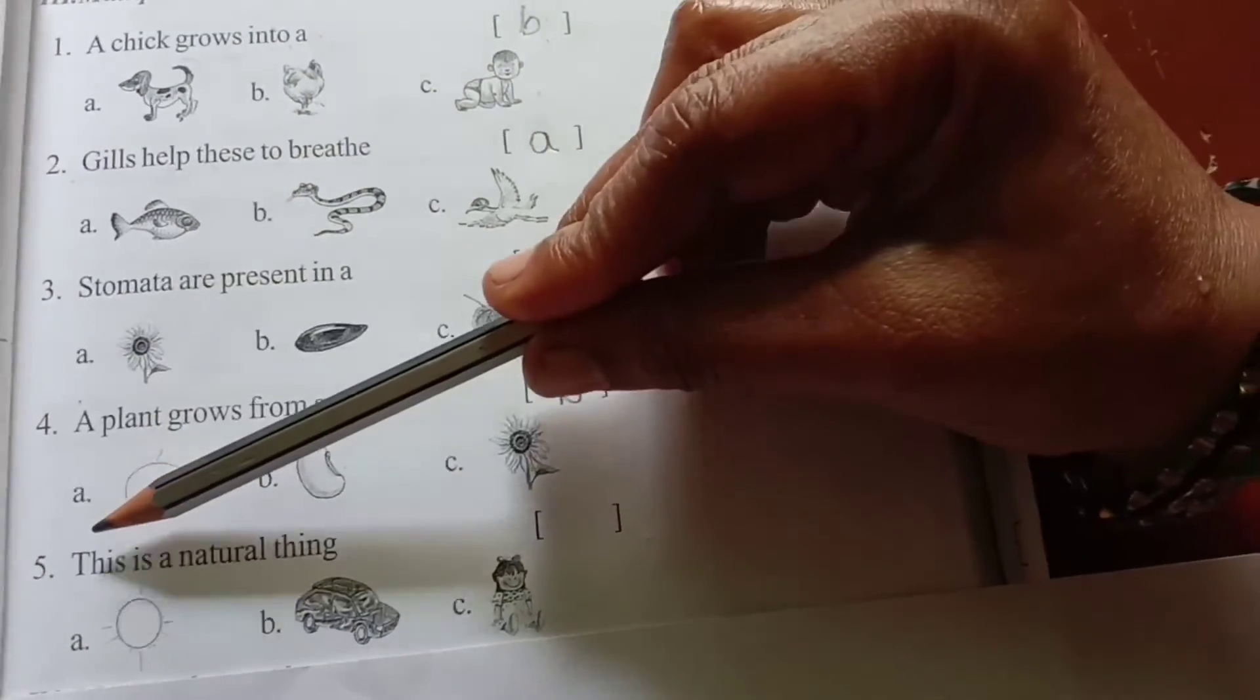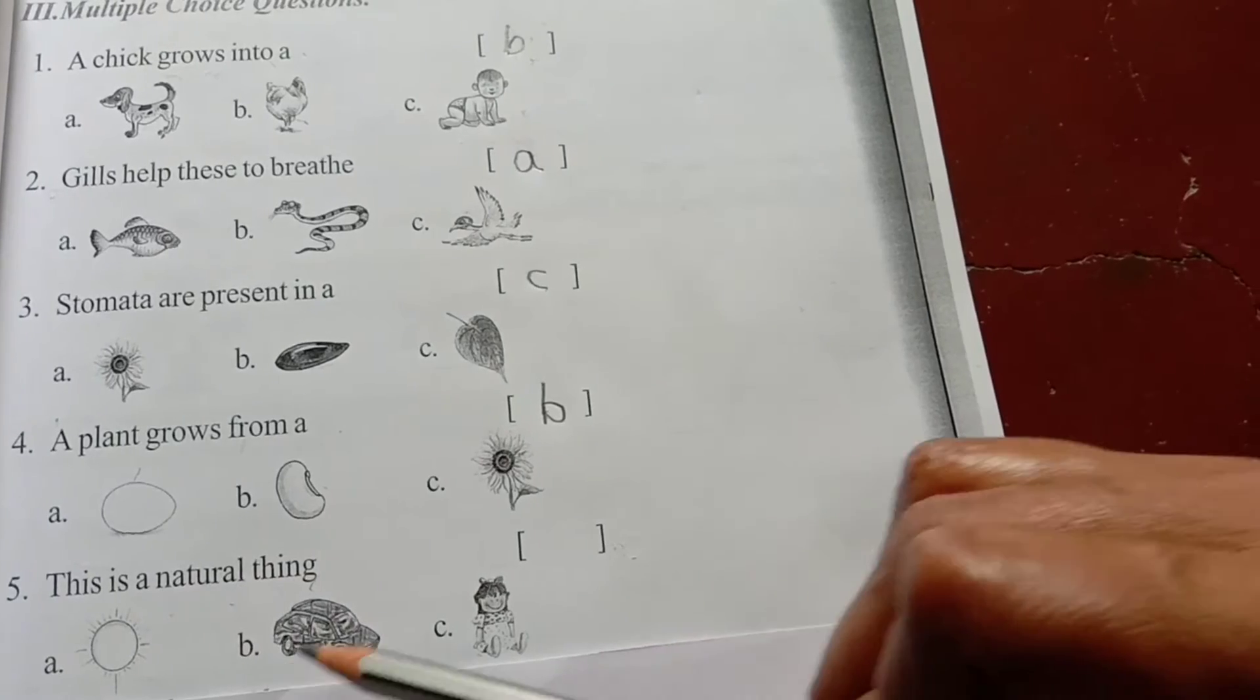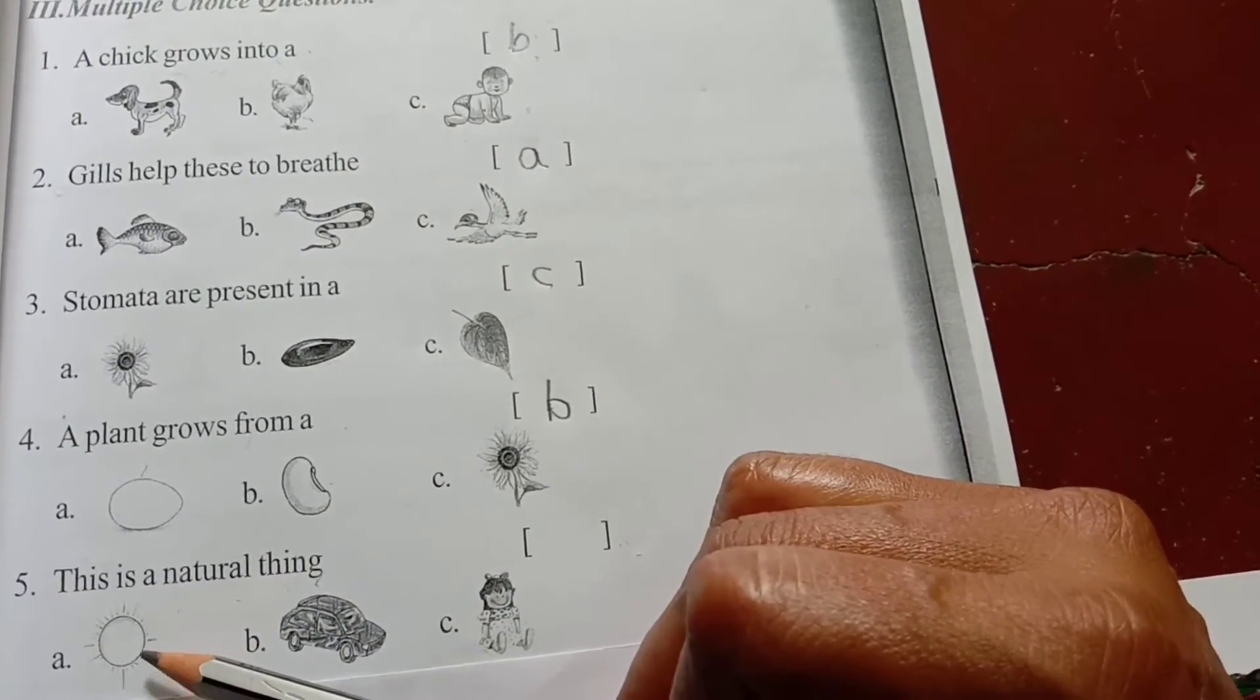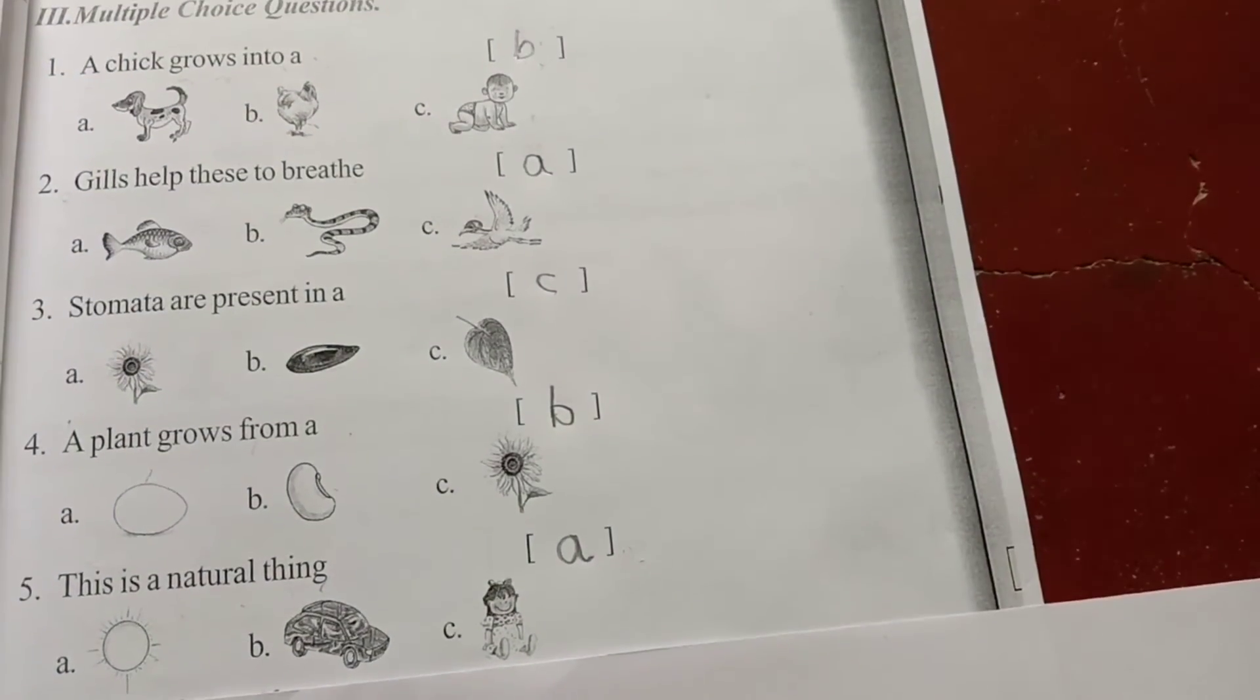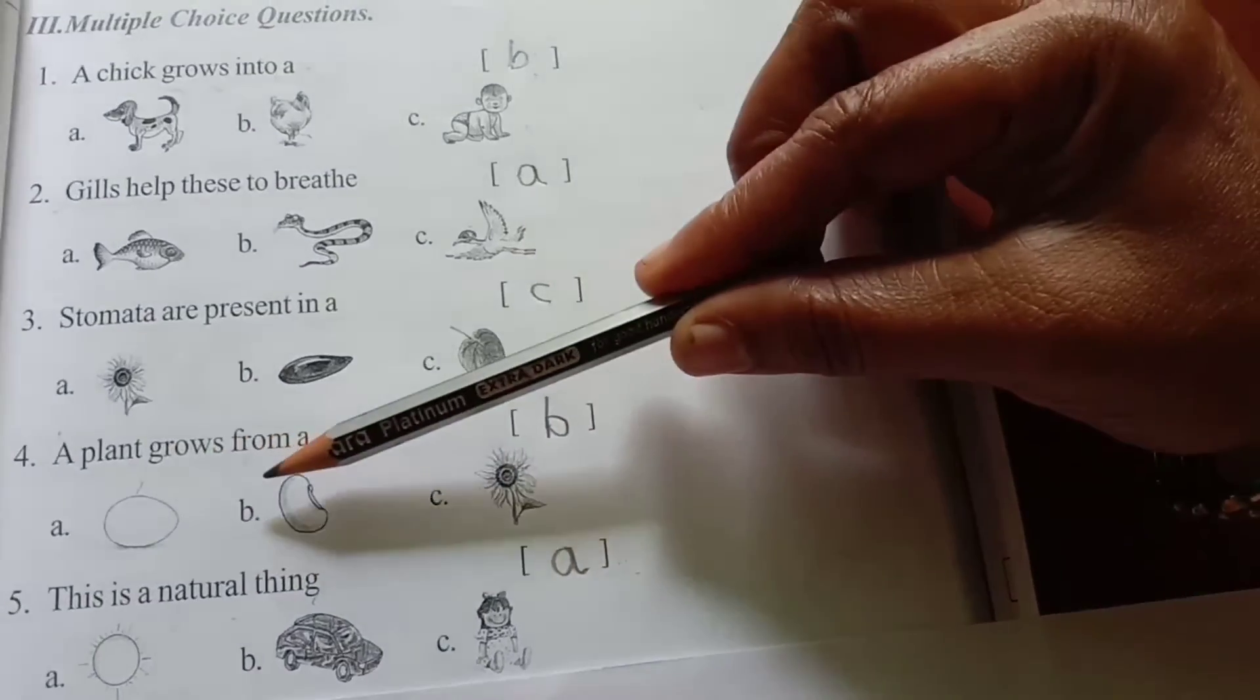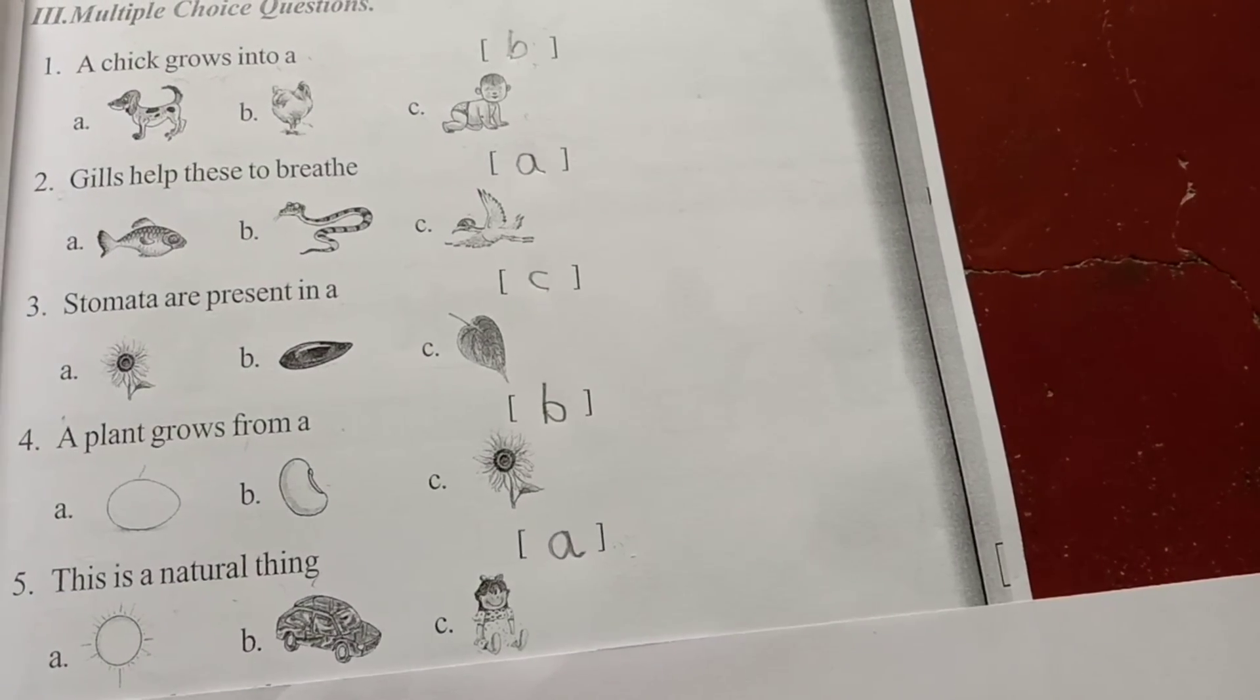Fifth one. This is a natural thing. First, A, sun. B, car. C, doll. Which is the natural thing? Sun is natural thing. A. Write one time in class work. Niemge figures will be continue next class. Thank you.